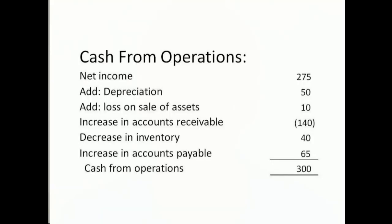The section of the cash flow statement that is the most difficult to understand is the operating section. This is because the operating section is essentially a reconciliation of accounting based on the accrual method to accounting based on the cash method. In order to make this happen, non-cash expenses, such as depreciation or the loss on the sale of an asset, have to be added back to net income. Additionally, changes in accounts that are meant to accommodate the accrual basis of accounting have to be added or subtracted.